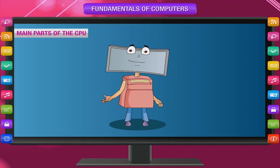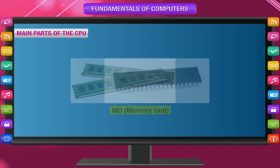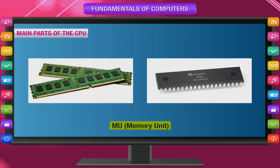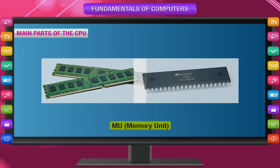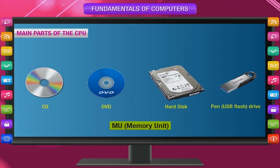There are three main parts of the CPU. The first one is the memory unit. The memory unit stores all the information temporarily in the computer system. If you want to store information permanently, send the output to storage devices like CD, DVD, hard disk, pen drive, etc.